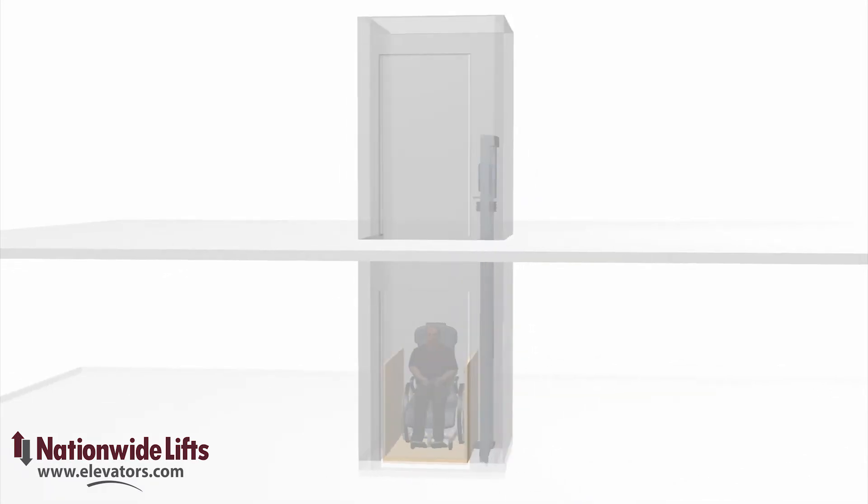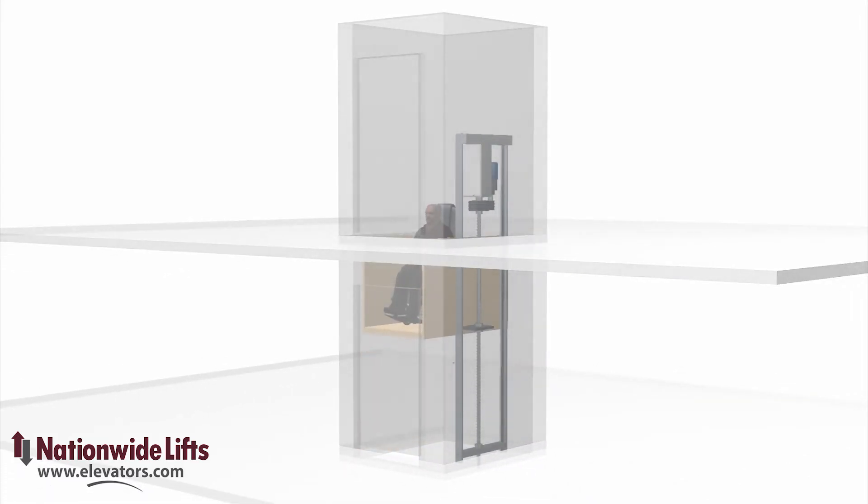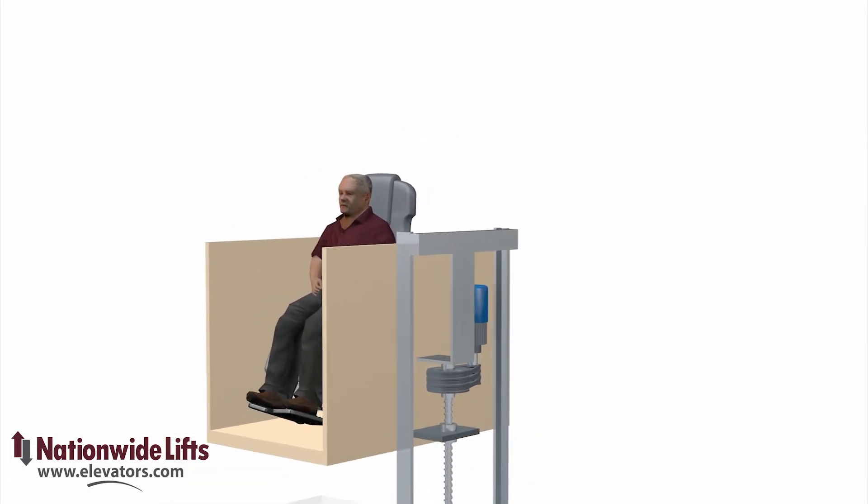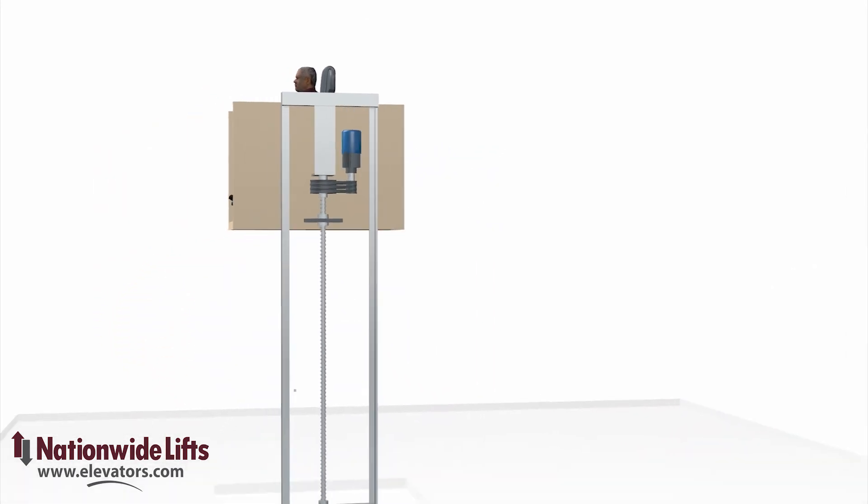An electric motor resides between the rails. It is connected to the screw shaft by belts. The drive nut is attached to the platform. As the screw shaft rotates, the drive nut and platform are moved up or down along the shaft.